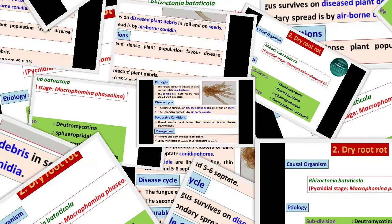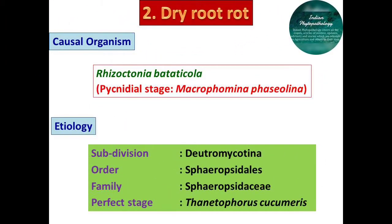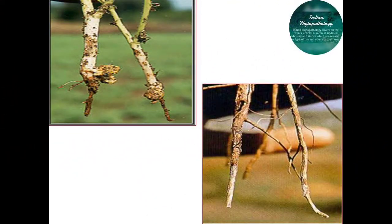Dry root rot is also a common disease found in bean crops. Its causal organism is Rhizoctonia bataticola, and its pycnidial stage is known as Macrophomina phaseolina. The disease symptoms start initially with yellowing and drooping of leaves; leaves later fall off and plants die within a week, showing symptoms parallel to wilt. Dark brown lesions are seen on the stem at ground level, and the bark shows shredding symptoms — this is the particular mark of identification for dry root rot disease.